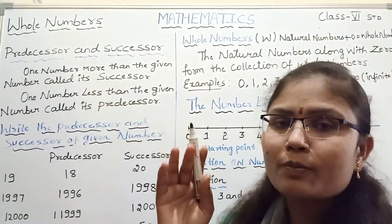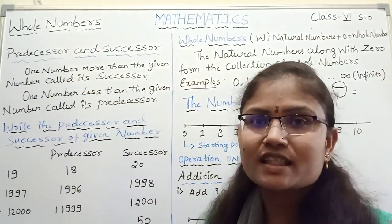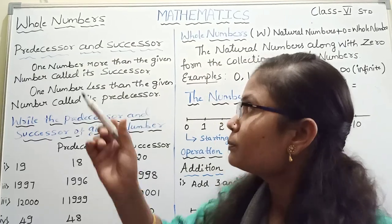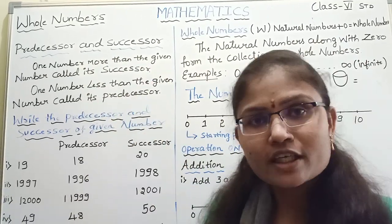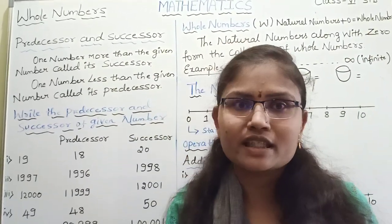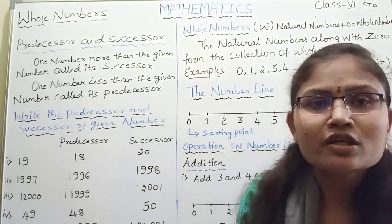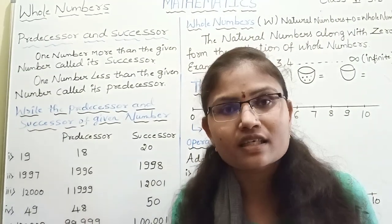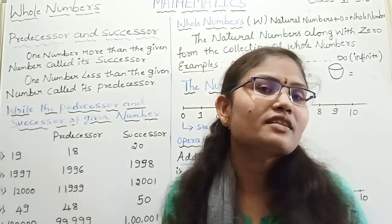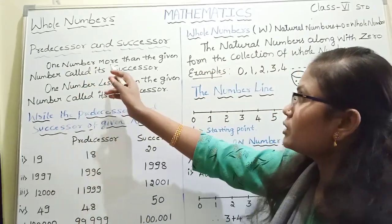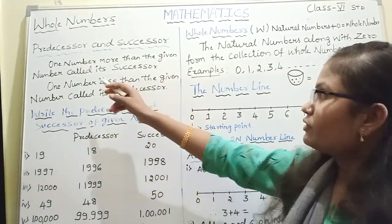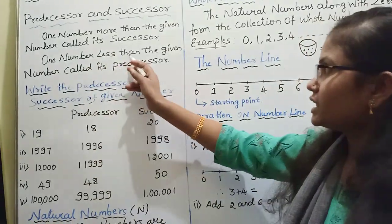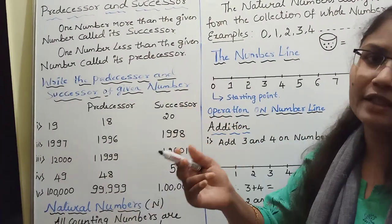Before going to the actual topic, let me discuss a concept you already know — that is none other than producer and successor. Can you say the producer of 5? That is 4. Can you say the successor of 5? That is 6. One number more than the given number is called its successor. One number less than the given number is called its producer.